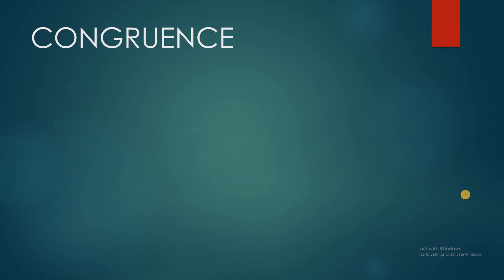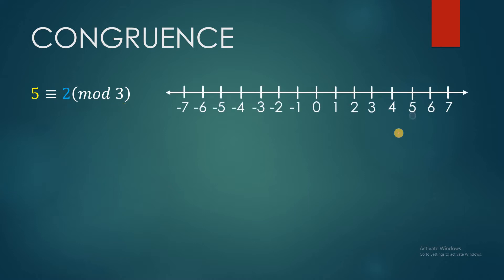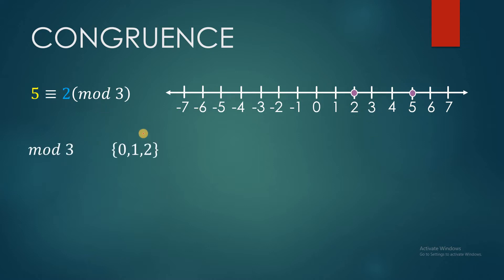Let's take a closer look at the first example: 5 congruent to 2 modulo 3. If we pull up the number line, we can say that 5 is located here and 2 is located there. Now, 2 and 5 are distinct numbers — they are not actually equal and they're different. However, in the world of modulo 3, this number line will be divided into 3 values only: 0, 1, and 2. Same if we have modulo 2, this number line would be categorized into 2 numbers: 0 and 1.